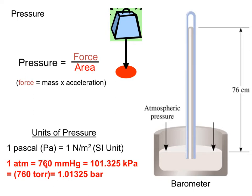So one atm is equal to 760 millimeters of mercury, which is equal to 101.325 kilopascals, and that's equal to 760 torr, which is equal to 1.01325 bar.